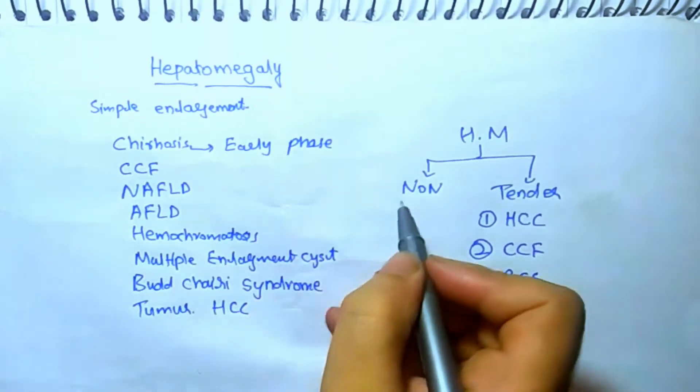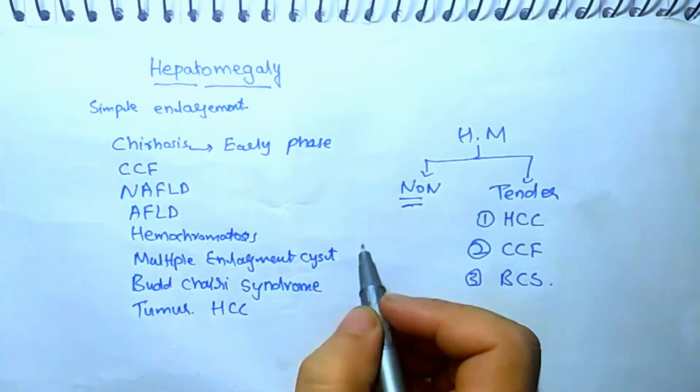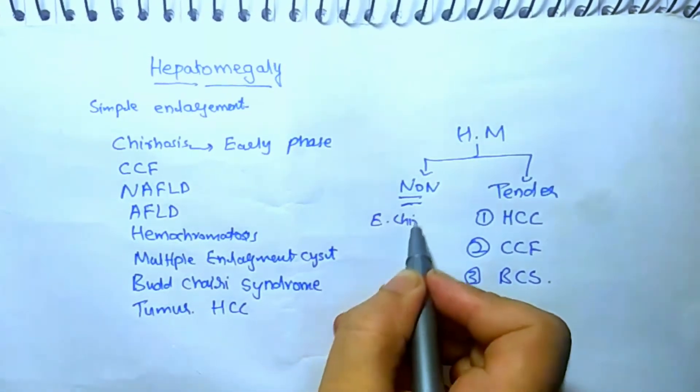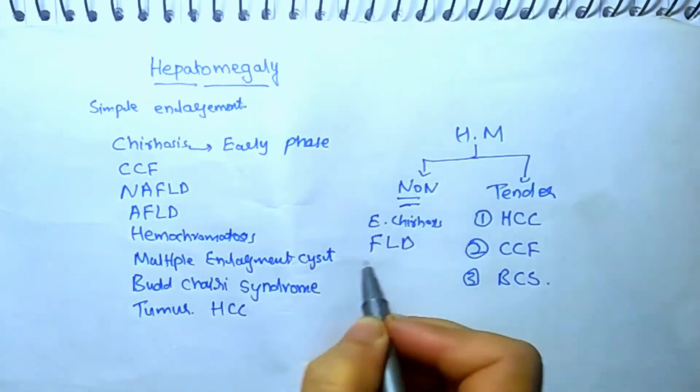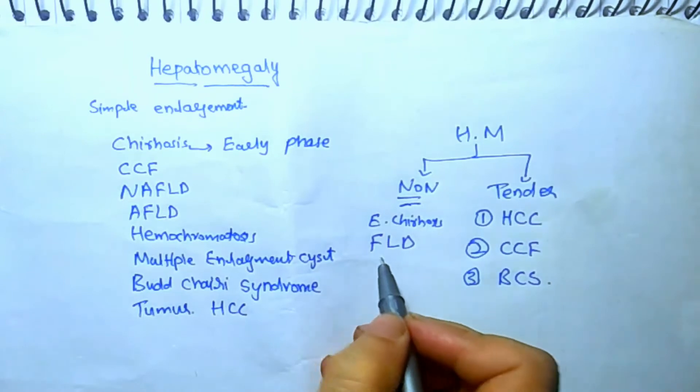The non-tender causes are early cirrhosis, fatty liver disease both alcoholic and non-alcoholic, hemochromatosis, and multiple enlargement cysts.